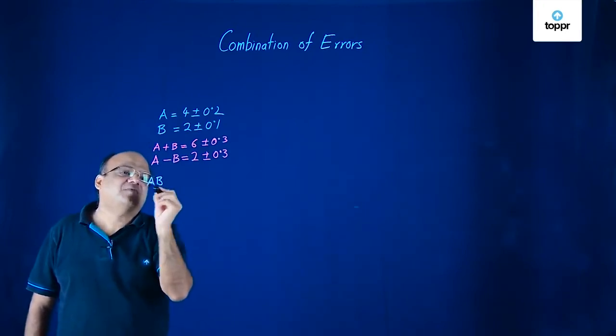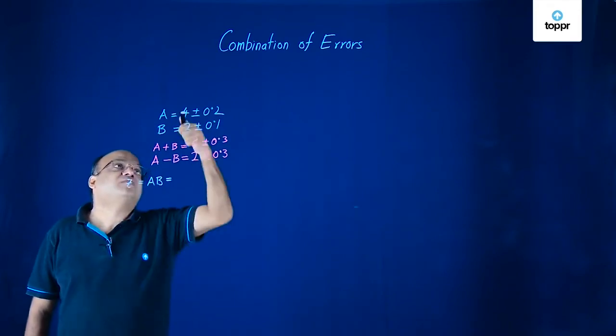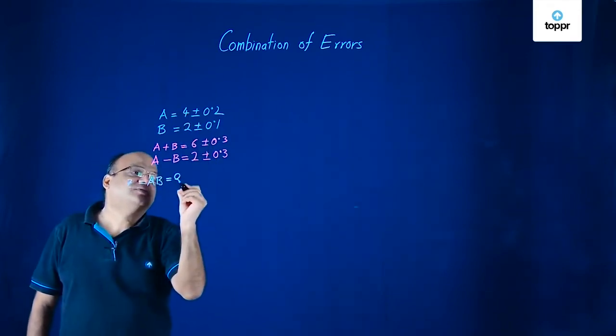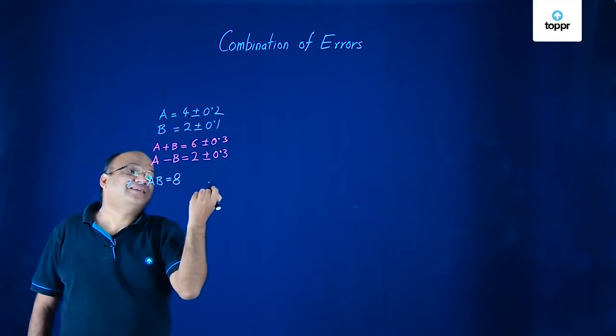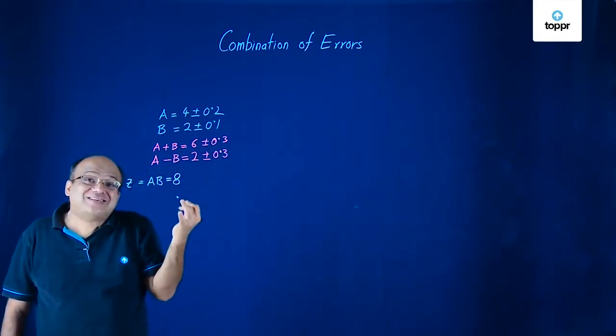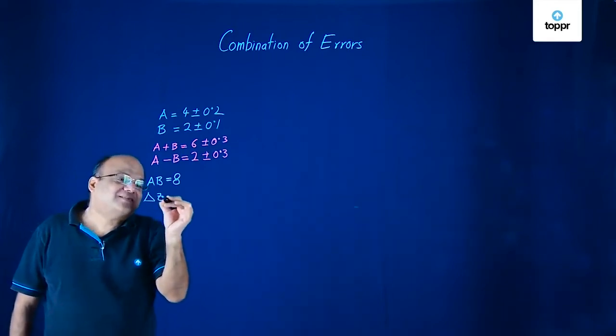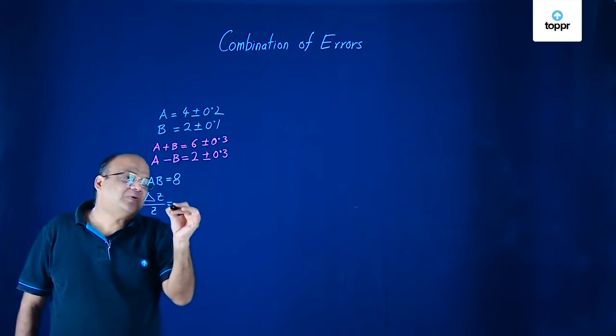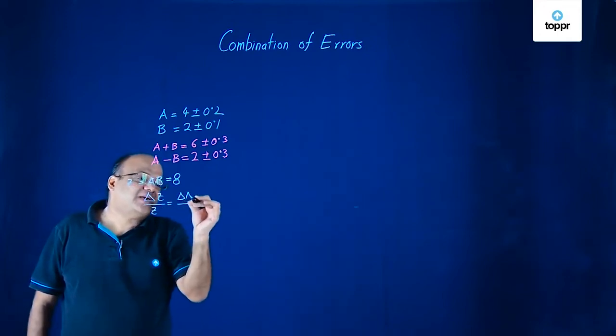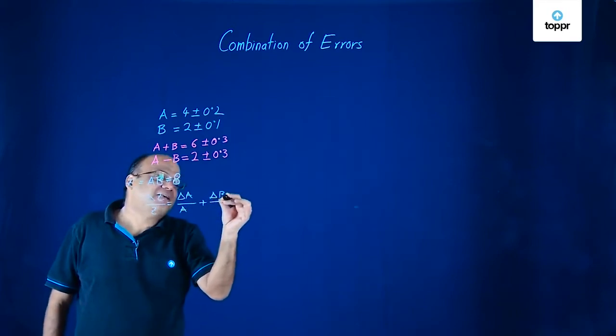Just multiply the numbers. So AB which is Z, this will be equal to 4 into 2, 8. Now plus minus, how will you find out? You will add the fractional errors.